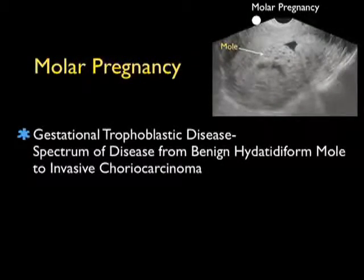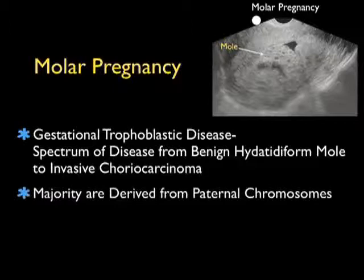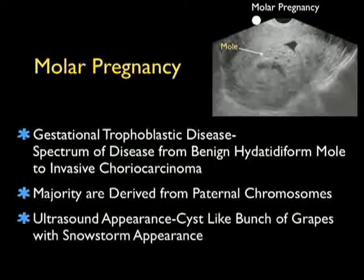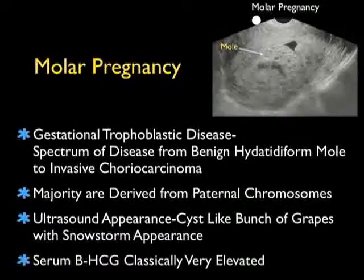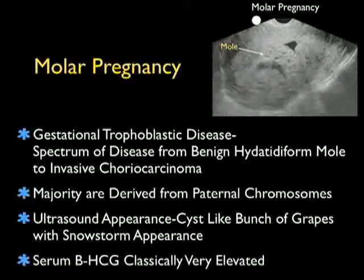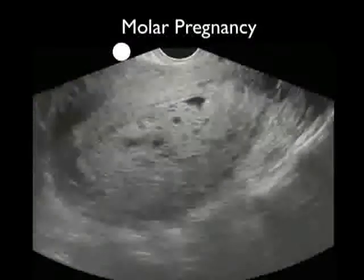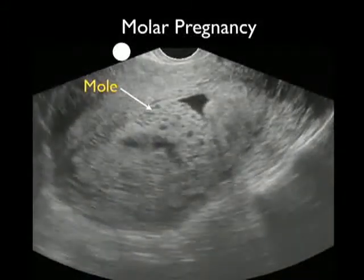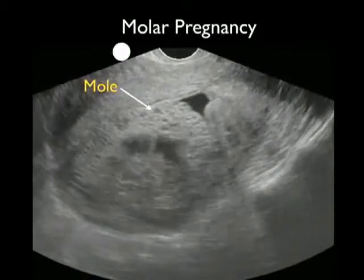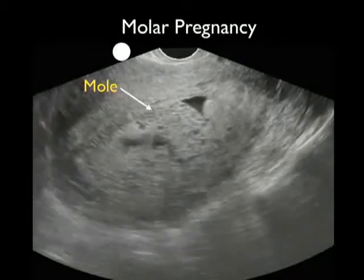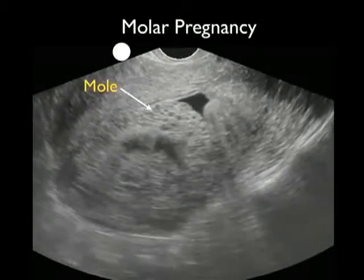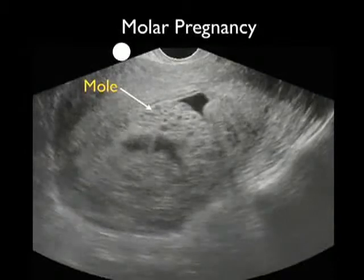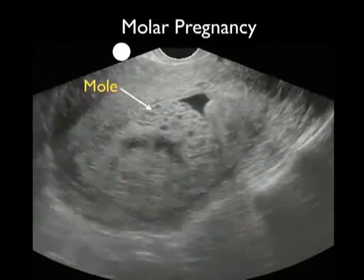I'd like to conclude this module with another form of abnormal pregnancy: a molar pregnancy, which is a form of gestational trophoblastic disease. This ranges from a benign hydatidiform mole to invasive choriocarcinoma. The majority are derived from paternal chromosomes with no maternal chromosomes in the embryo. The ultrasound appearance will be a cyst-like bunch of grapes with a snowstorm-type appearance, and classically the serum beta-HCG will be very elevated. Here's video from a patient who presented with uncontrolled hypertension, vaginal bleeding, and pain. We see the molar pregnancy within the fundal region of the uterus — a cyst-like appearance very different from a normal intrauterine pregnancy, almost like a bunch of grapes within the fundus. My next move was to get an OBGYN consultation stat.